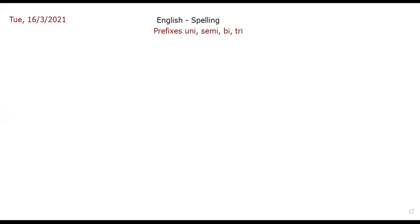Our lesson today is about prefixes: uni, semi, bi, and tri. Who can remind me what a prefix is? A prefix is a word part that comes at the beginning of the word, and the job of these prefixes is to change the meaning of the word.